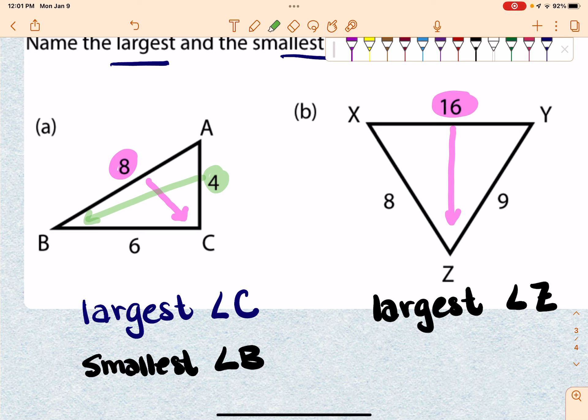Okay, in the next one, the smallest side is going to be 8. The angle across from that is Y. So my smallest angle is going to be angle Y.